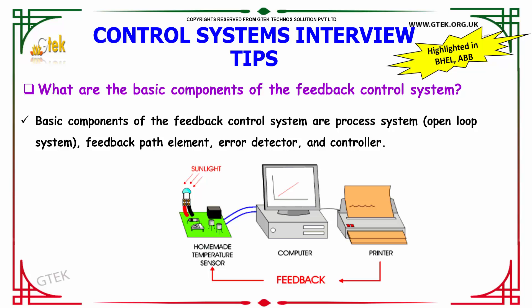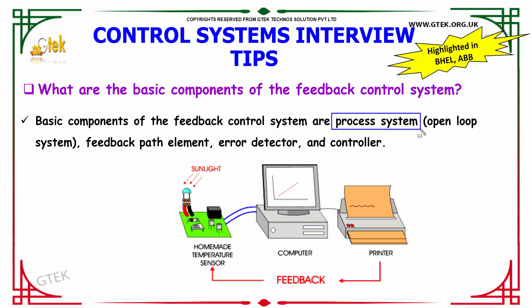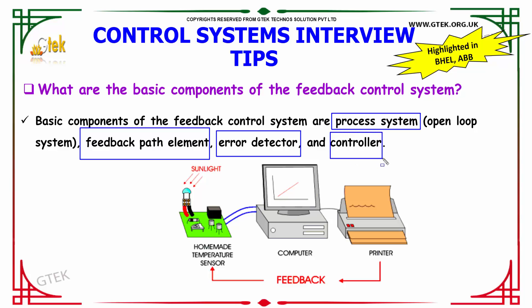What are the basic components of the feedback control system? The basic components are: the process system (also called the open loop system), the feedback path element, the error detector, and the controller. These are the basic components of the feedback control system.